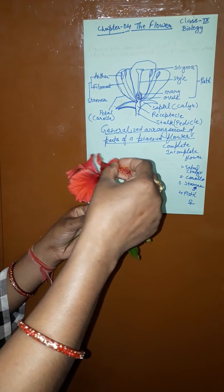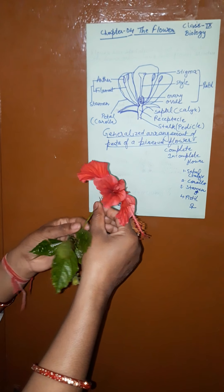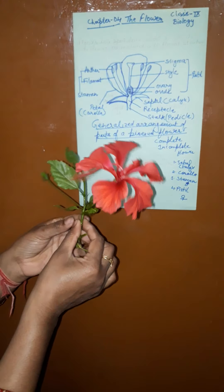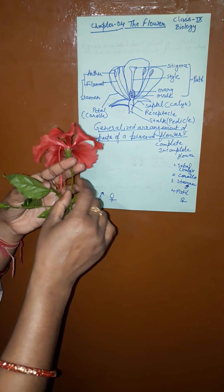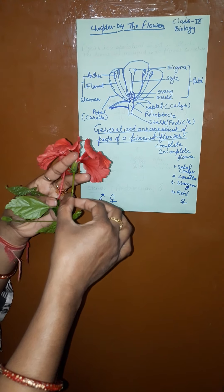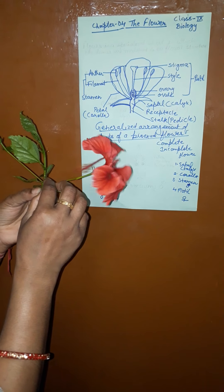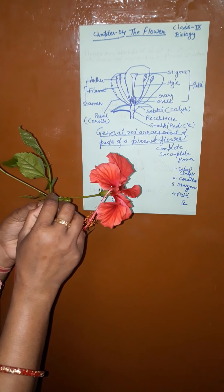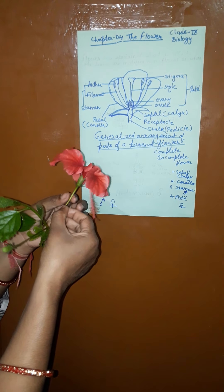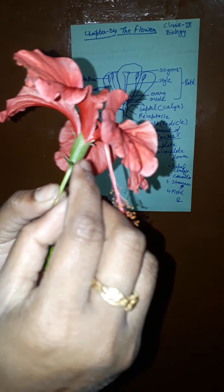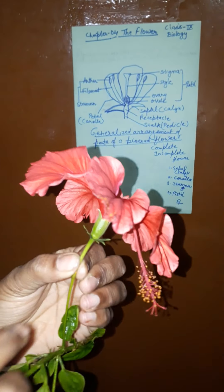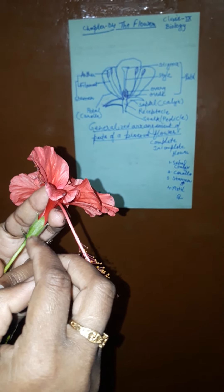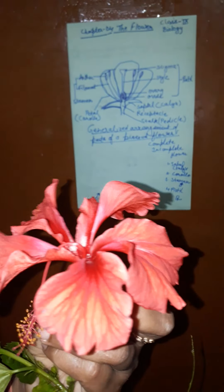This is a bisexual flower — both pistil and stamen are present. This stalk is the pedicel. These minute structures are called bracts. In the case of hibiscus, one more whorl is present — that is called epicalyx. This is the epicalyx, and this is the sepal or calyx — the smaller one. And this inner whorl is called epicalyx. This one is petal or corolla.